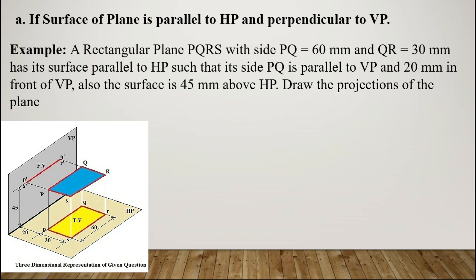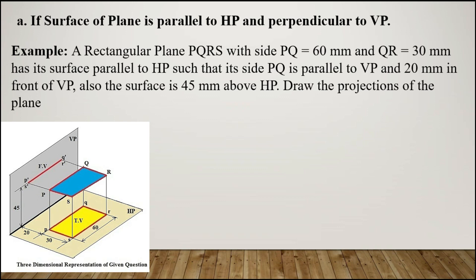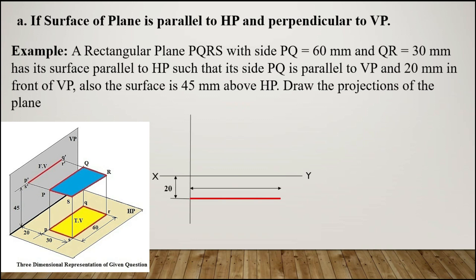For this example, we draw the top view first. This is the XY line. First step: take a projector, take a distance equal to 20 mm, then draw a line 60 mm long parallel to XY. Then take PS = QR = 30 mm and complete the rectangle. Once you finish with the top view, name the points P, Q, R, and S.